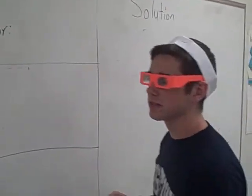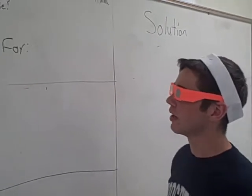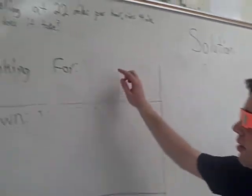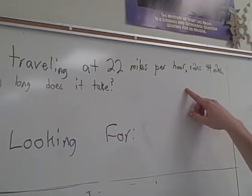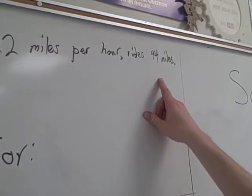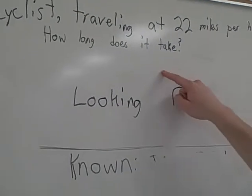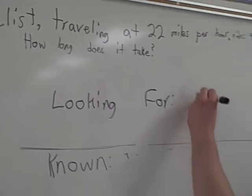All right, so continuing off of our last video about velocity, what we have here is a bicyclist going 22 miles per hour, and they ride a distance of 44 miles. And what we're looking for is how long it takes them, so we're looking for time.